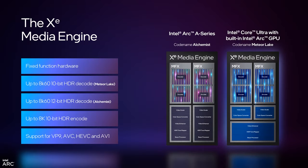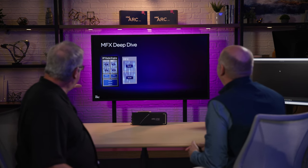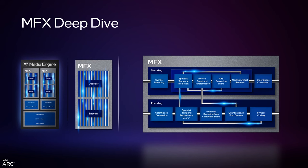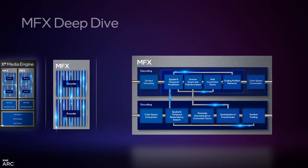On the Meteor Lake SKUs, it does 8K60 10-bit HDR decode. On the Alchemist or Arc A750, it does up to 8K60 12-bit HDR decode. Really high performance, low power decoding and encoding on both our CPU and GPU. Our MFX engine implements in hardware all those blocks we talked about — dedicated hardware for color space conversion, spatial-temporal processing, frequency conversion, quantization, and symbol encoding — and the inverse on the decoder side.